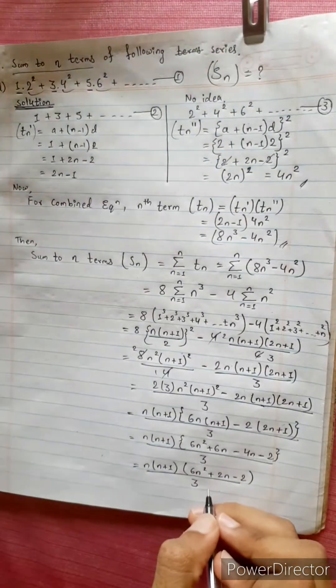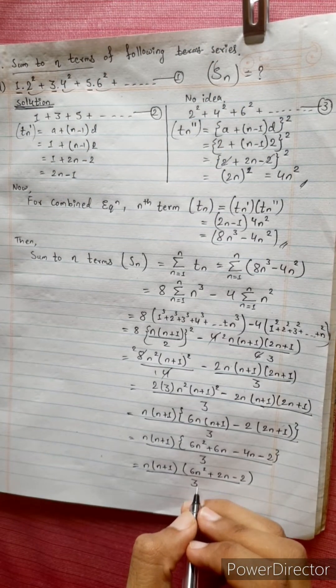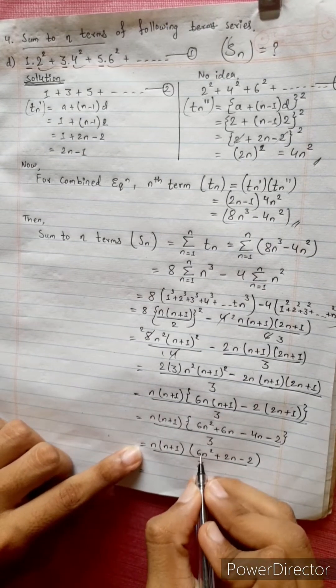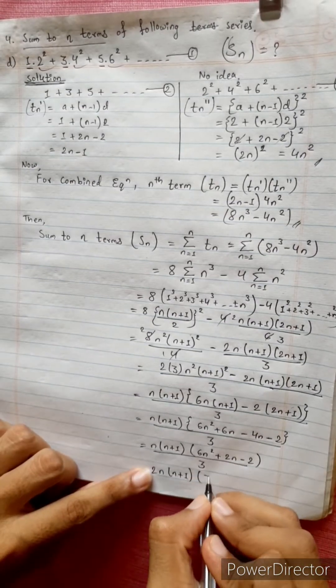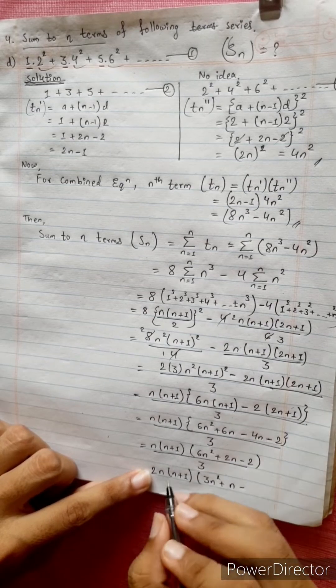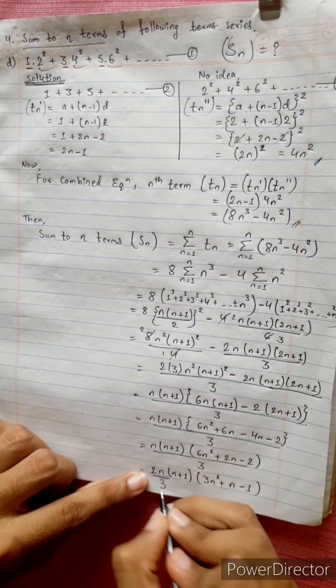Taking 2 common from the numerator: 2 times n times n plus 1 times 3n square plus n minus 1, divide by 3.